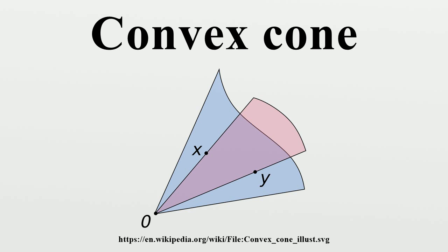The empty set, the space V, and any linear subspace of V are convex cones by this definition. Other examples are the set of all positive multiples of an arbitrary vector v of V, or the positive orthant of R^n.